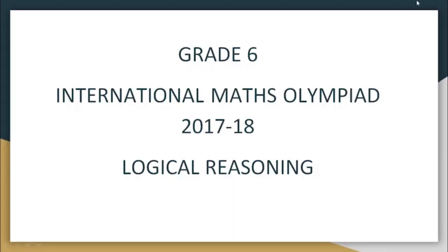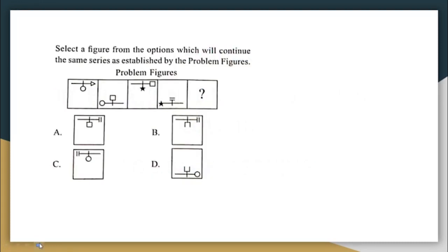Hello children. In this video we will solve questions that were asked in the International Maths Olympiad 2017-18 from the logical reasoning section for Standard 6. Let's get started. The first question is on your screen: select a figure from the options which will continue the same series as established by the problem figures. You have to find out what will come in the place of the question mark.